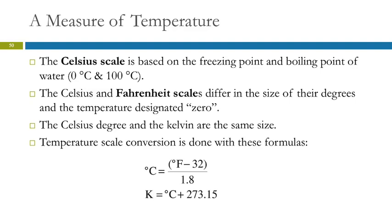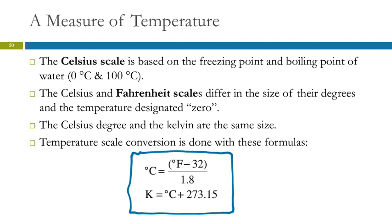These are equations you should memorize: the conversion between Celsius and Fahrenheit, and the conversion between Kelvin and Celsius. We have to use equations for these — we can't use dimensional analysis to convert temperatures because there's an addition component, since the zeros are not in the same place. Zero length is zero in any unit, but on temperature scales the zeros are in different places, so we must use equations.